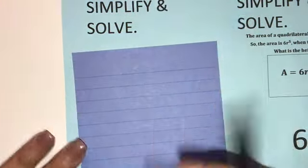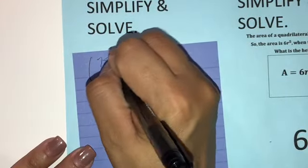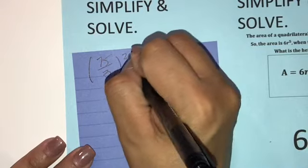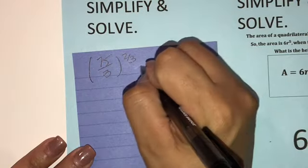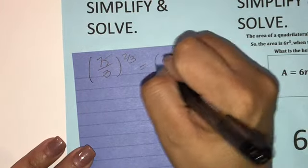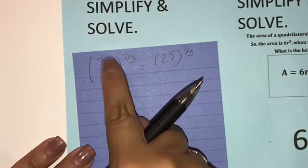Okay, so for number 5, 75 over 3 to 2 thirds. I'm going to use order of operations. I'm going to get 25 to the 2 thirds. 3 goes in 75,